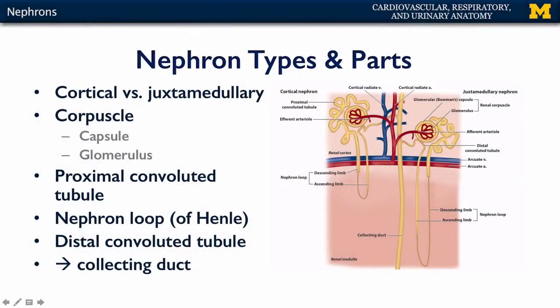There are cortical nephrons. Cortical nephrons sit a little higher in the renal cortex, and they're more ubiquitous. About four-fifths, or 80%, of the nephrons in the kidney are cortical nephrons.